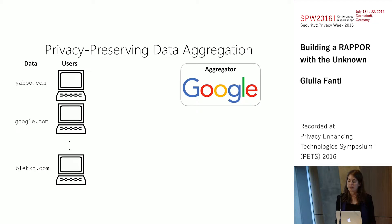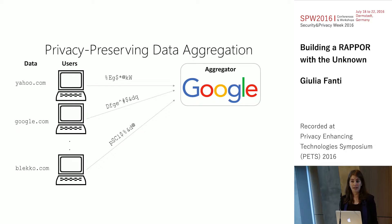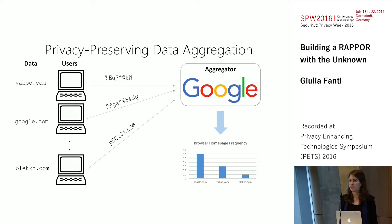The idea is that each user will add some statistical noise to their data in such a way that the noise masks the underlying data piece. They'll generate some randomness and then send these randomized reports to the aggregator. The aggregator will then apply some post-processing to these reports and extract the desired information — in this case, a distribution over the underlying strings.